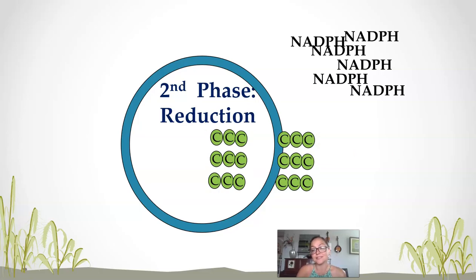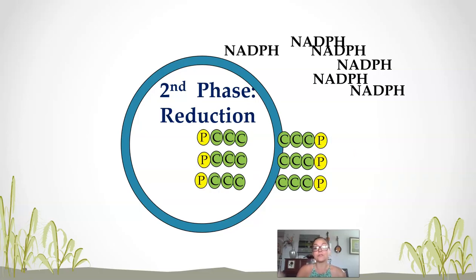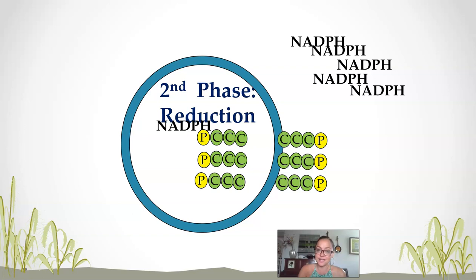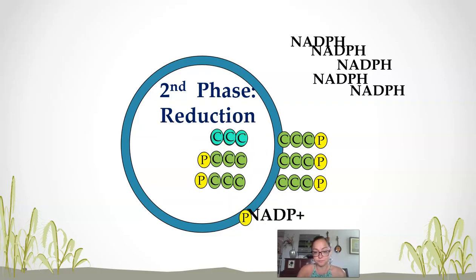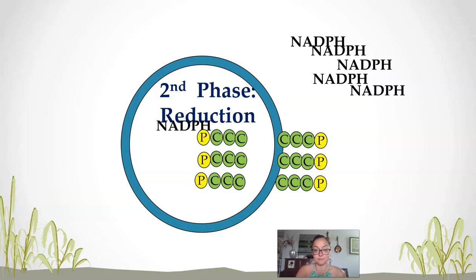In a redox reaction, we oxidize the electron carrier and the electrons and hydrogens need to go somewhere, so we reduce that three-carbon molecule. In the process, one of those phosphates comes off. That is what is happening in phase two.